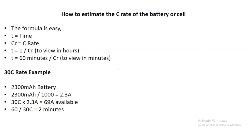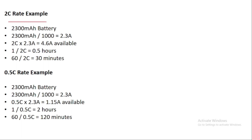Let me share some formulas to calculate the time. Here you can see a 30C rate example — if you know the C-rate and the rated capacity, you can calculate the discharge time: how many minutes it will take to discharge completely. You can use these formulas to calculate, with examples shown for 2C rate and 4.5C rate.